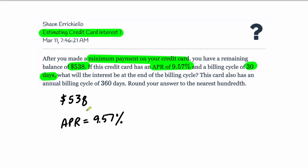So it's that $538 plus our new interest. This card also has an annual billing cycle of 360 days. Round your answer to the nearest hundredth.